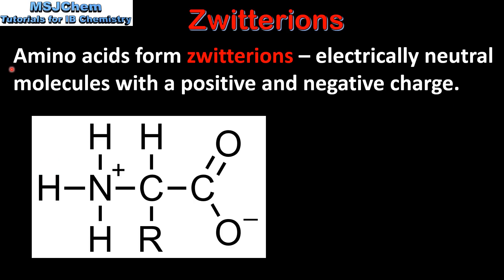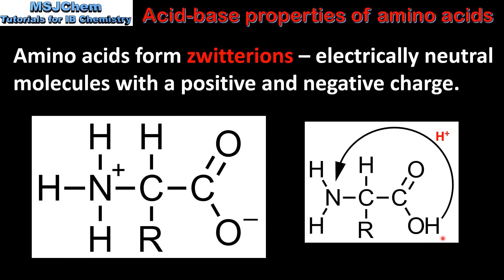Amino acids form zwitterions which are electrically neutral molecules with a positive and negative charge. Here we have the structure of an amino acid as a zwitterion. The zwitterion is formed when the hydrogen ion from the carboxylic acid group bonds to the nitrogen atom on the amino group. This produces a positive charge on the amino group and a negative charge on the carboxylic acid group, but overall the molecule is electrically neutral.